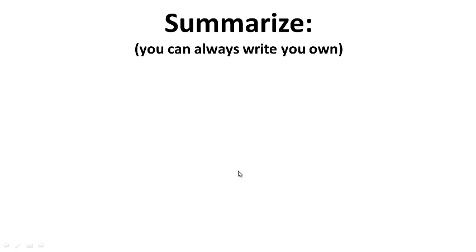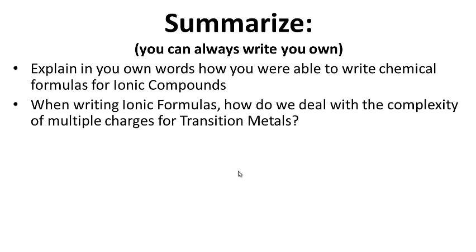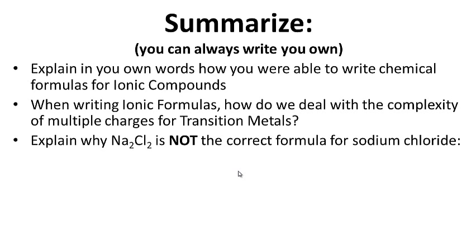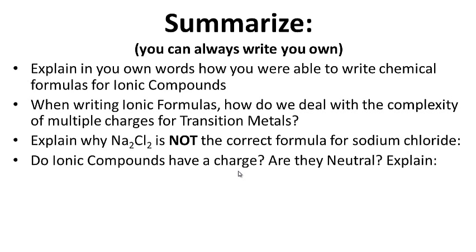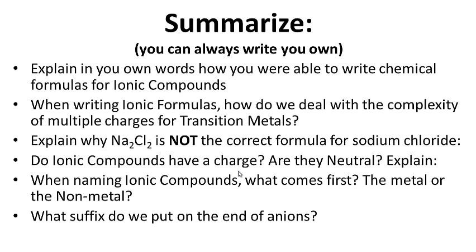For your summary, explain in your own words how to write chemical formulas for ionic compounds. When writing ionic formulas, how do we deal with the complexity of multiple charges for transition metals? Explain why Na2Cl2 is not the correct formula for sodium chloride. Do ionic compounds have a charge, or are they neutral? When naming ionic compounds, what comes first — the metal or the non-metal? And finally, what suffix do we put on the end of anions when writing them? Go ahead and pause this while you finish your notes, and we'll see you next time.